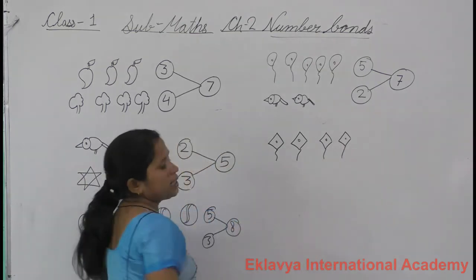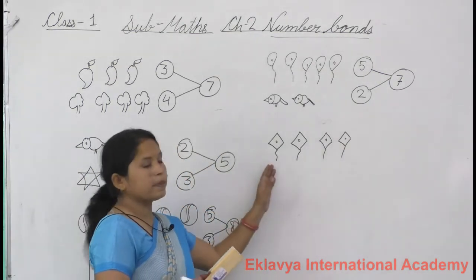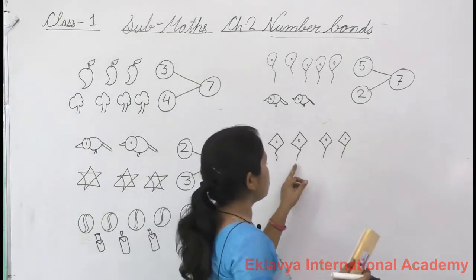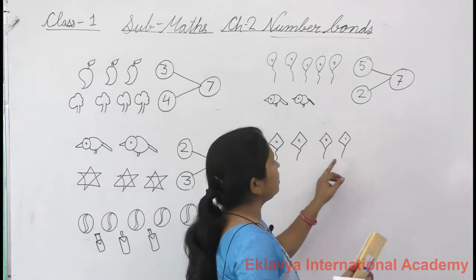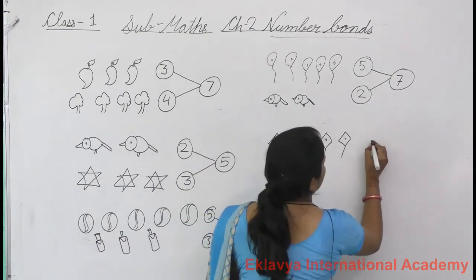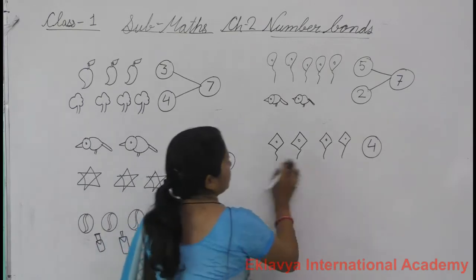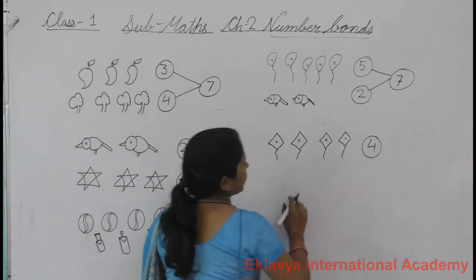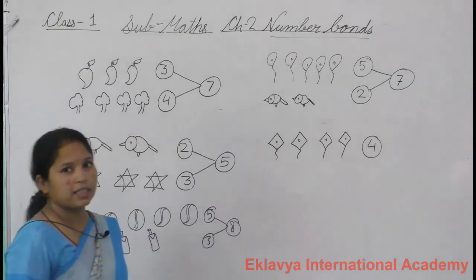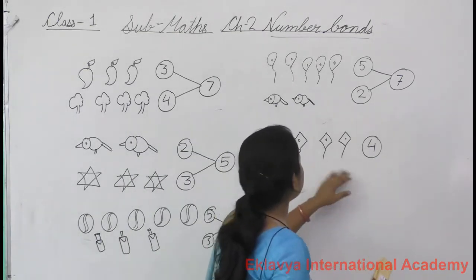How many kites are there? Tell me — speak and count. One, two, three, four. Four kites. You fly kites in Makar Sankranti. Yes, I know. You fly kites.